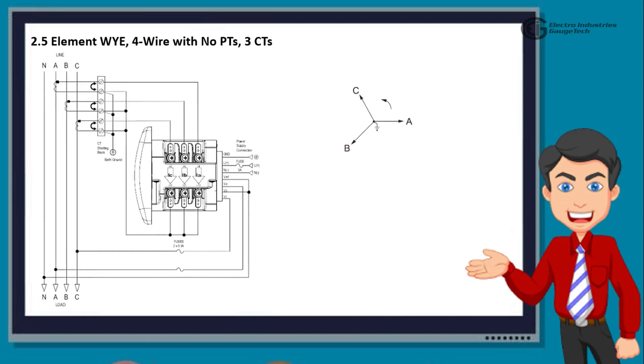Now, the next diagram shows the 2.5 element Y, 4 wire with no PTs, 3 CTs. This is a 3 phase, 4 wire system Y with direct voltage, and 2.5 element. When using this wiring, select 2.5 EL Y from the Shark Meter's front panel display.